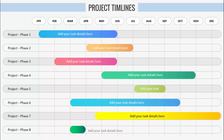In today's tutorial, I'm going to show you how to create a 12-month project timeline slide in PowerPoint. I have put all the months starting from January till December, and at the row level you can add the phases of the project or your tasks. I've added eight tasks or phases here with different color combinations for the timeline.